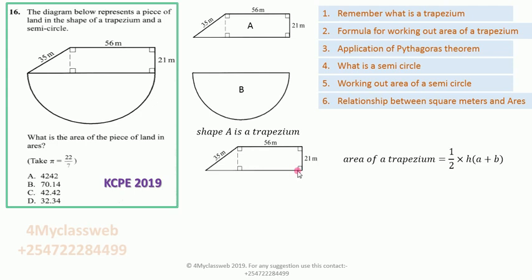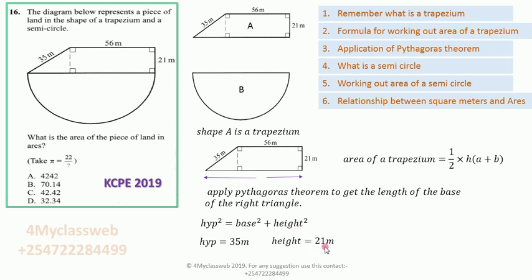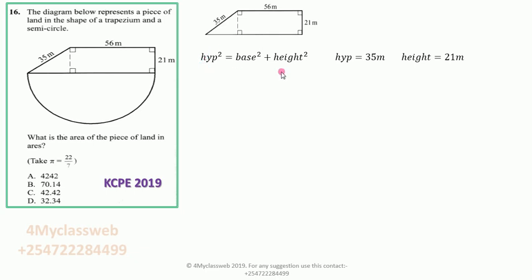We have the length of 56, but there is another section which is not given. This section, which is part of the right-angle triangle, can only be obtained by applying Pythagoras theorem. So we apply Pythagoras theorem to get the length of the base, and once we add that section to the 56, we shall have the whole of that longer length. According to Pythagoras theorem: hypotenuse squared equals base squared plus height squared.